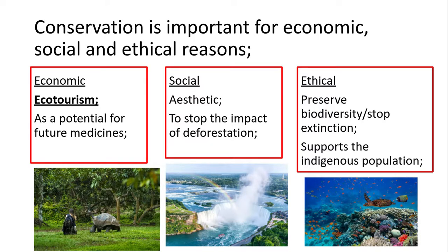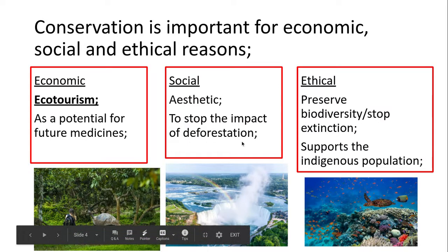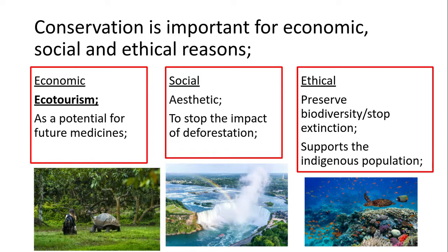We've also got the protection for future medicines. There are a lot of new medicines that can be found in microorganisms and plants, so we need to try and protect those areas because in the future they might provide more medicines that we can sell and make money from. Social reasons: it's aesthetic — it means it's beautiful to look at, such as the Niagara Falls in that image there. And also you might argue, to prevent or stop the impacts of deforestation.